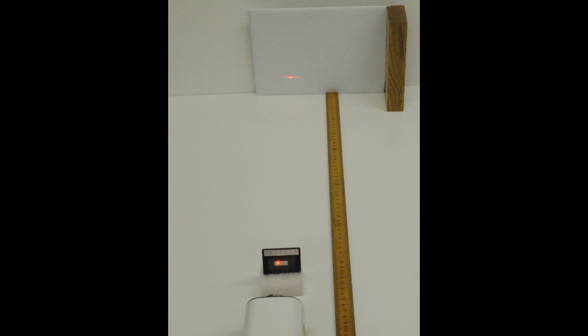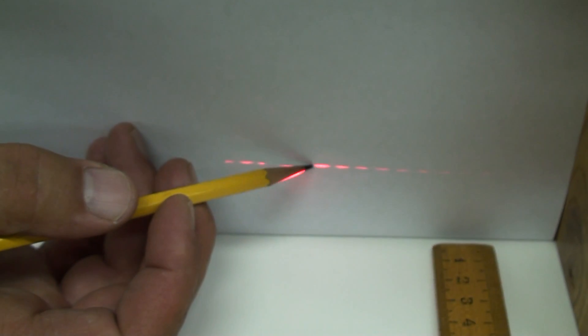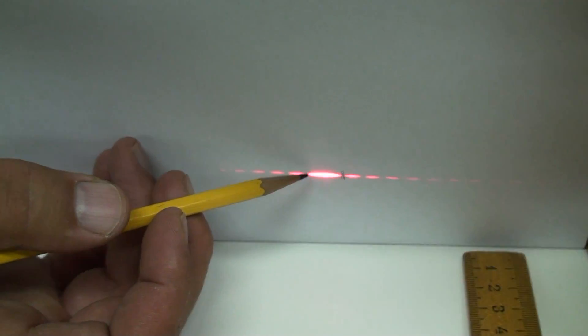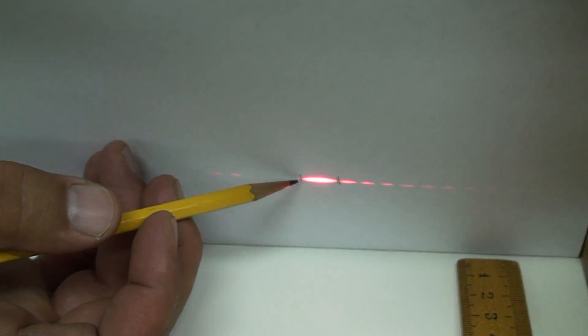We set it up as for the double slit, with L quite large. Locate the two dark spots on either side of the central bright spot. From y, L, and the wavelength of the laser, determine the slit size, a.